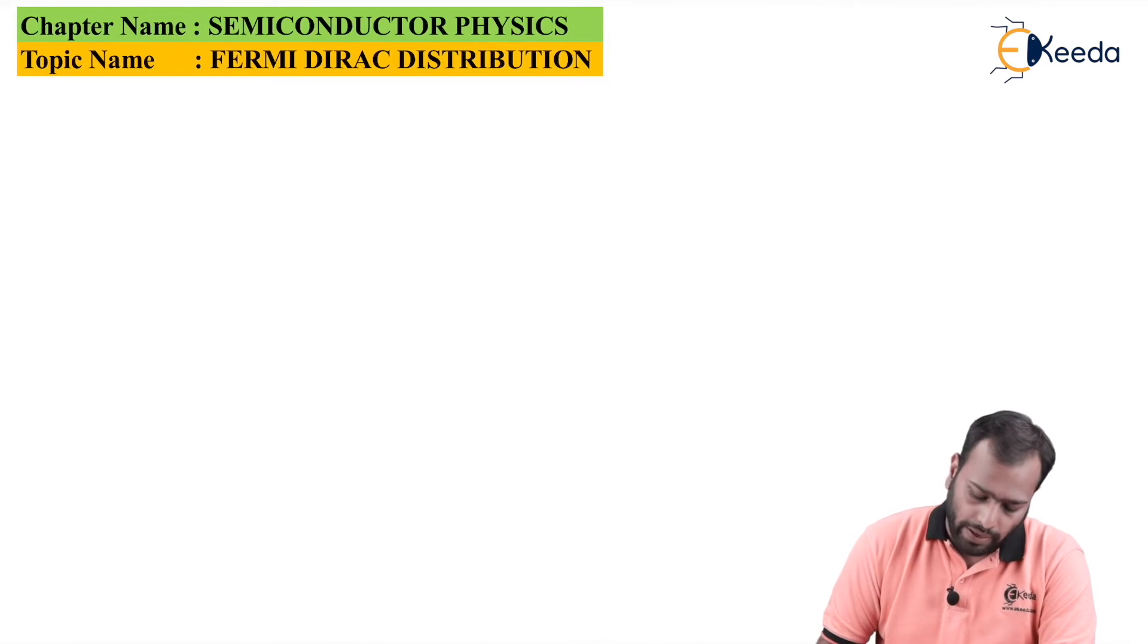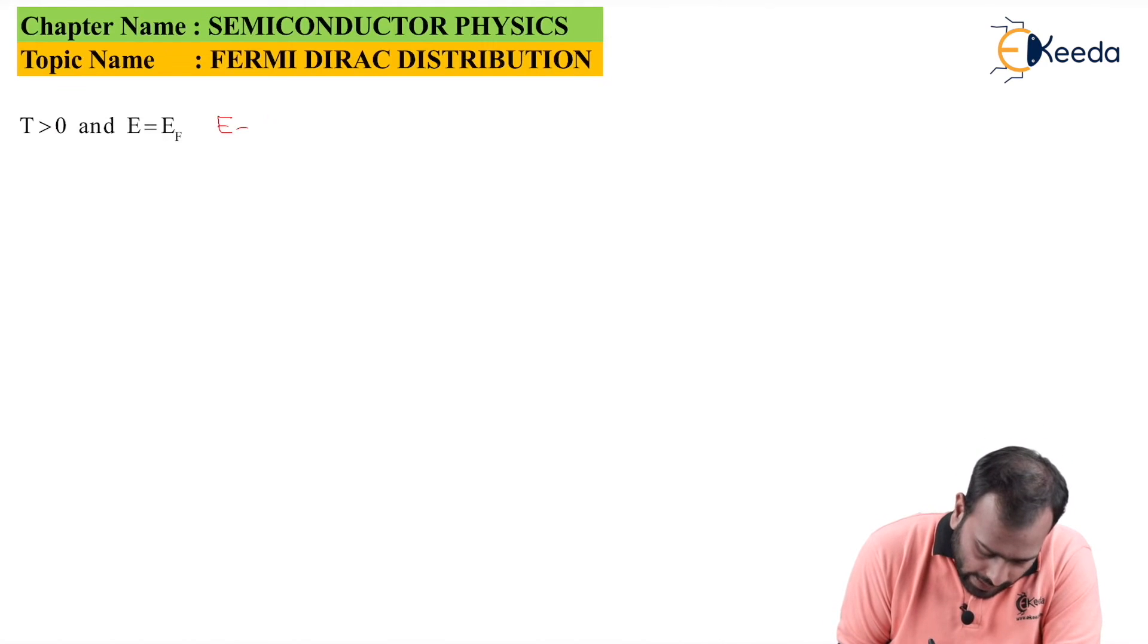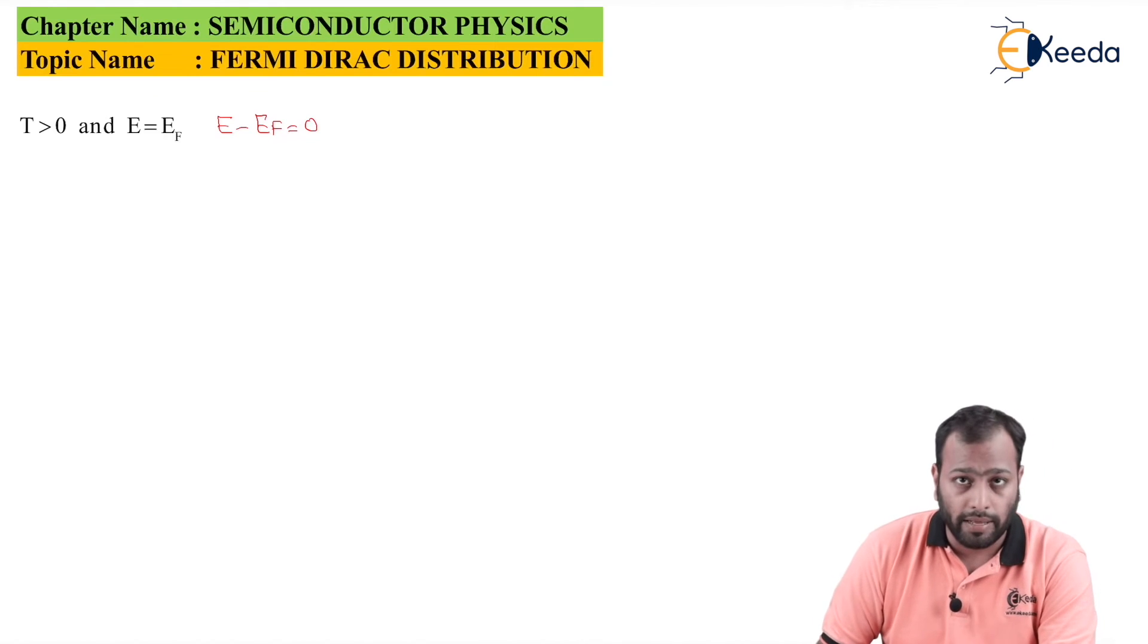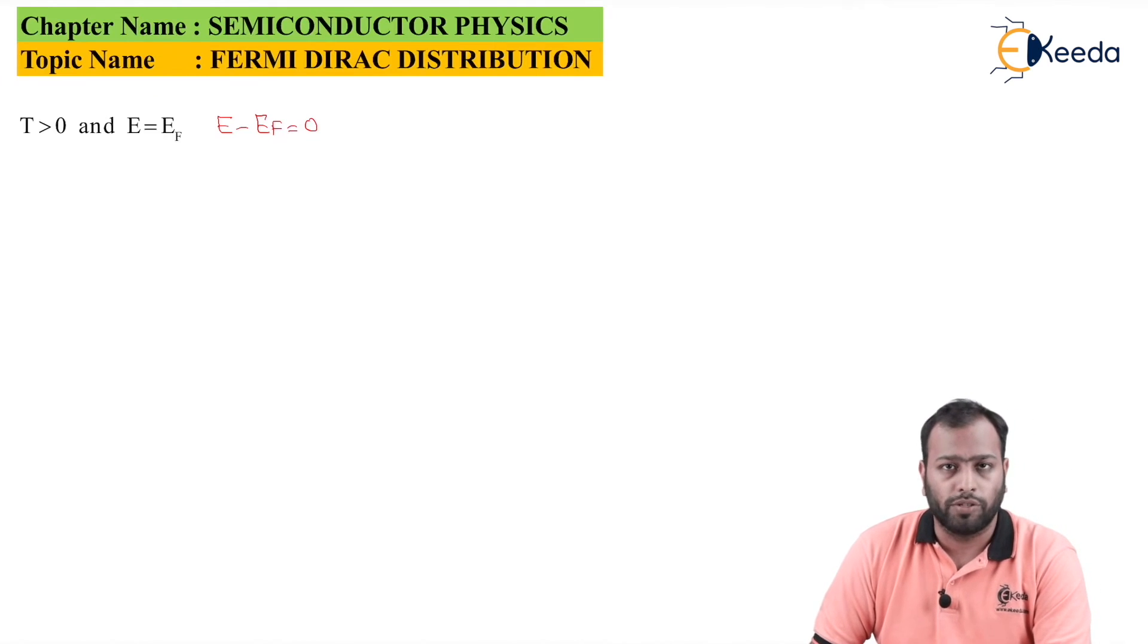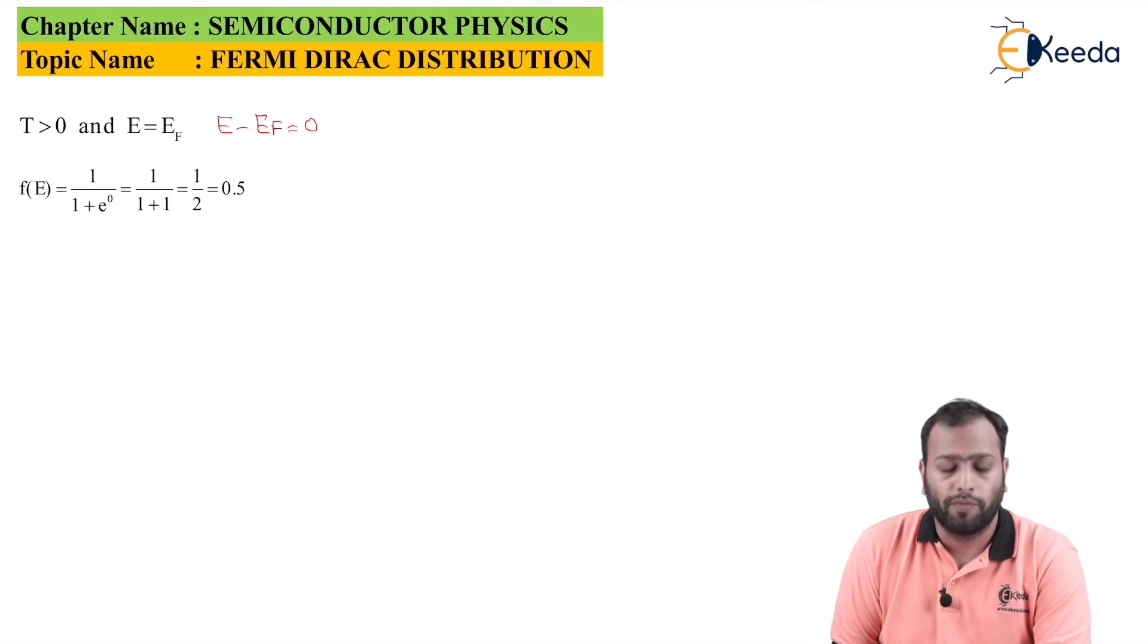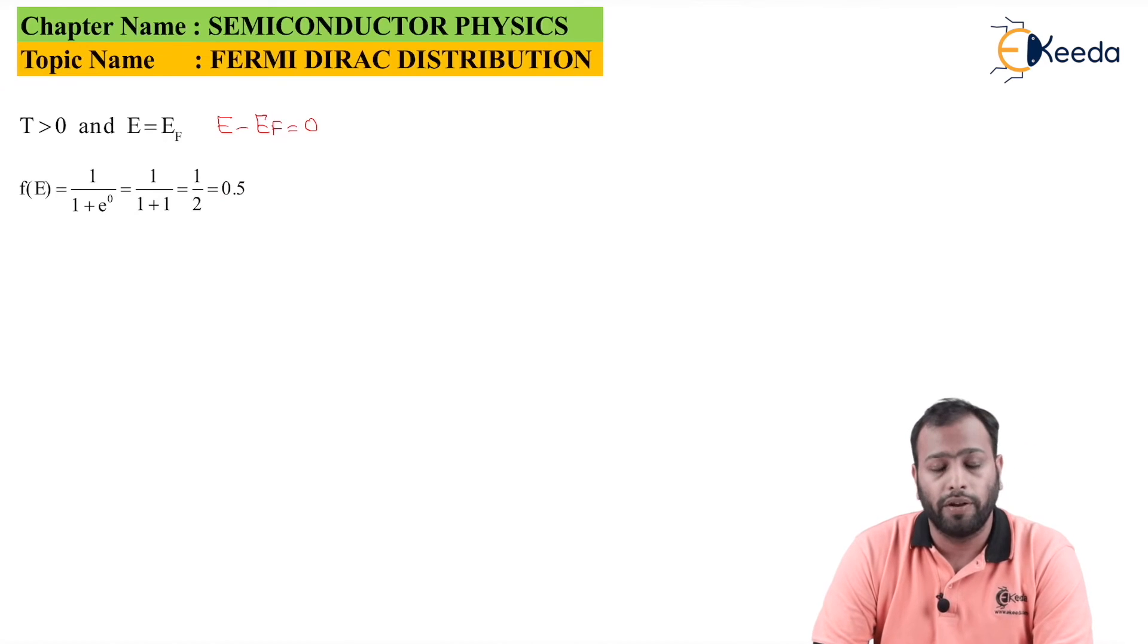Now, let's take a third case where T is greater than 0 and E is equal to EF, which means E minus EF is equal to 0. As you know, E minus EF is equal to 0 here and T is greater than 0. This case is applicable for all the temperatures right from 0 to infinity. If you are plugging these values in the probability distribution function, you will be getting F(E) is equal to 1 upon 1 plus e raised to 0, which means 1 upon 1 plus 1, which is nothing but 0.5.